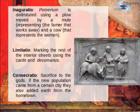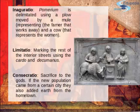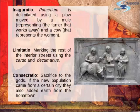Then came the inauguratio — where the limits of the town, the pomerium, were decided. A plow was used to mark all around the perimeter, pulled by a mule representing the farmer and the male, and a cow representing the female. One symbolizes hard work and the other nourishment — that is the symbolism behind it.